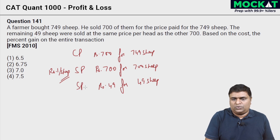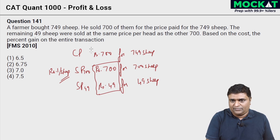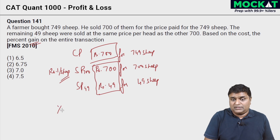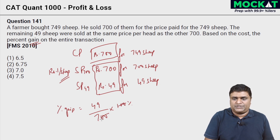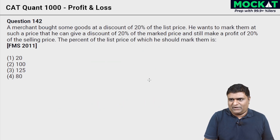Total selling price is 700 plus 49, which is 749. Your cost price is 700. The percentage gain is 749 minus 700, that's 49, divided by the cost price 700, into 100 percent. Knock off the zeros: 49 by 7 is 7 percent. So the answer is option 3.